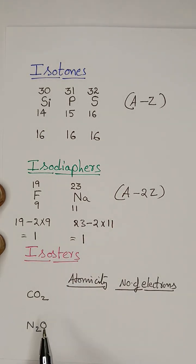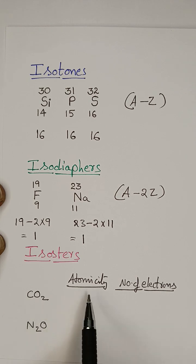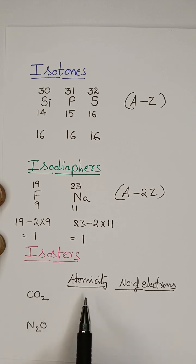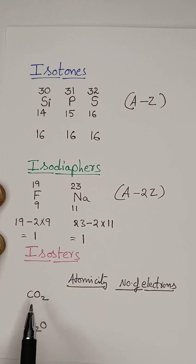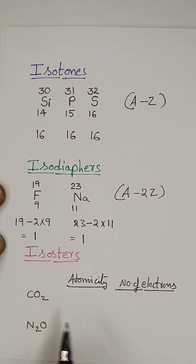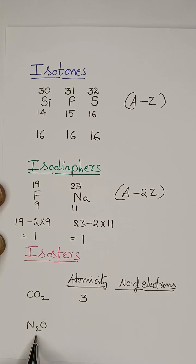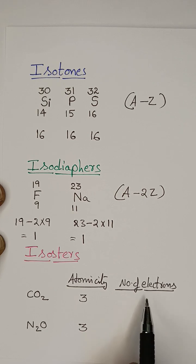Next, isosters. Isosters means molecules having the same atomicity and the same number of electrons. Atomicity means the number of atoms present in a molecule. Here, CO2 has 3 atoms, so atomicity of CO2 is 3. Atomicity of N2O is also 3.